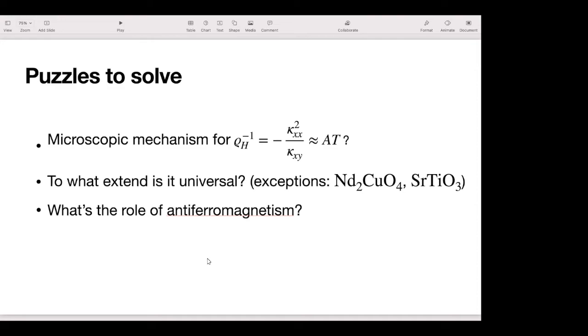The third question would be, in many of the cases, the material is anti-ferromagnetic. If it's not magnons that are transporting heat, then what is it? What's the role of anti-ferromagnetism, magnetism in this effect? So many open questions.